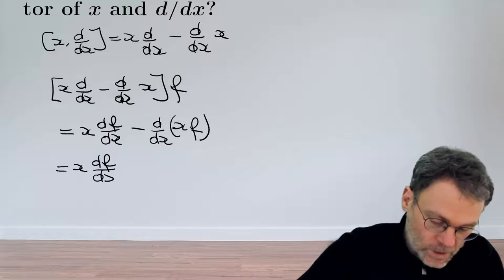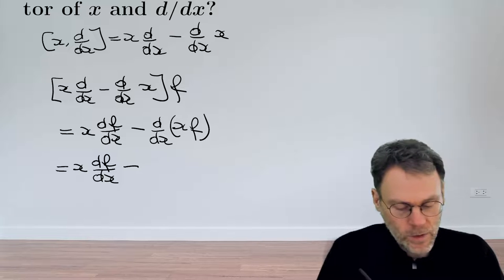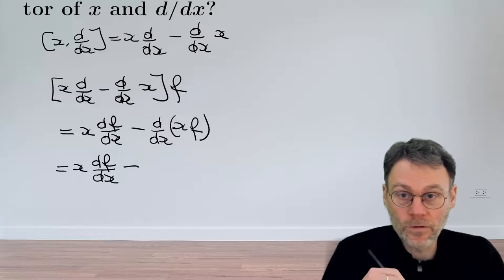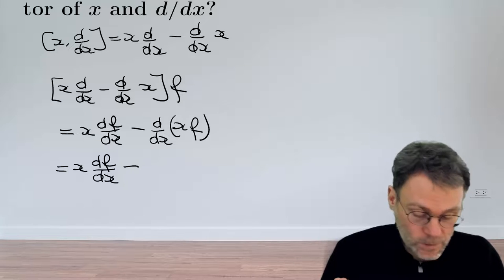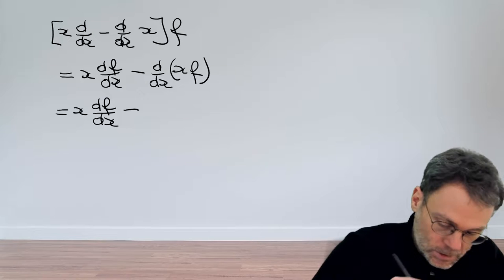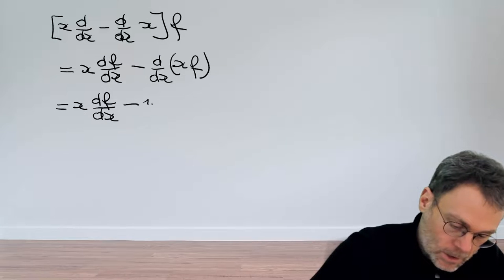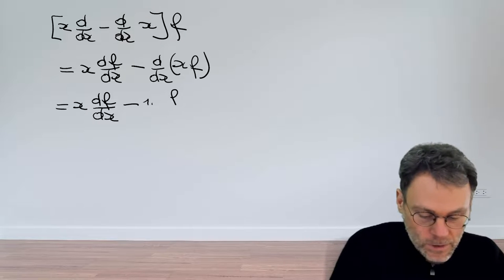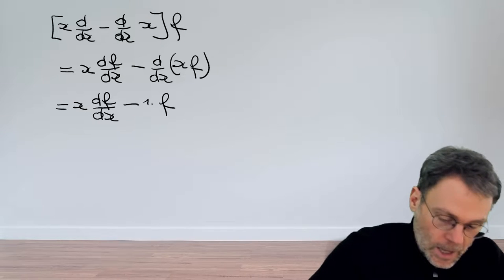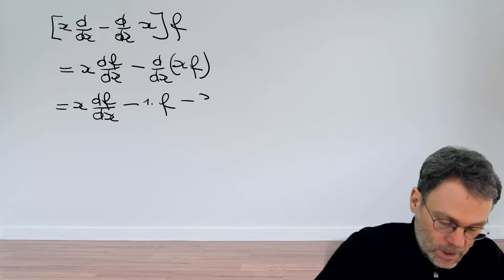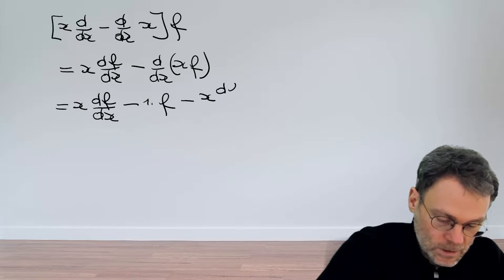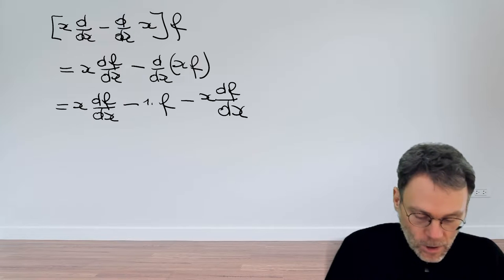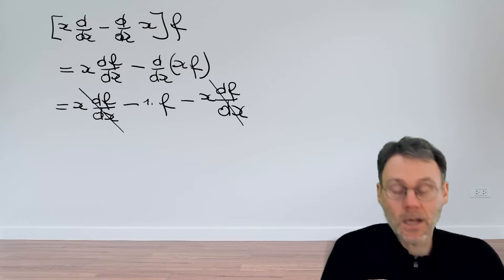Let's simplify this. We have x df/dx, and then we take the derivative of a product. The derivative of the first factor with respect to x gives us one, so we have one times f. Then we have x times the derivative of the second factor, which is df/dx. The good news is that these terms cancel.